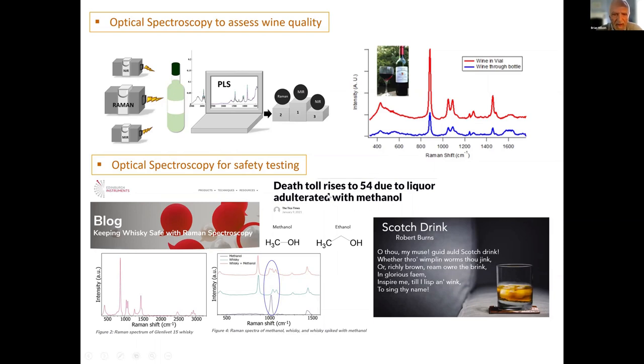There's an interesting case here of using optical spectroscopy for safety testing. This was an incident where scotch was being deliberately adulterated with methanol. Methanol, which is a very similar molecule to ethanol, is actually fairly lethal. You can use things like Raman spectroscopy to determine whether or not there is methanol present in the liquid.